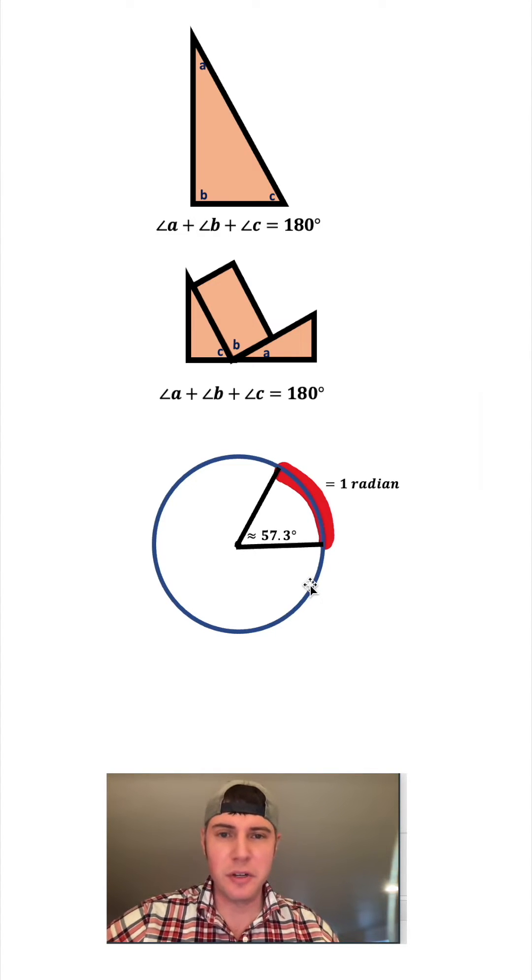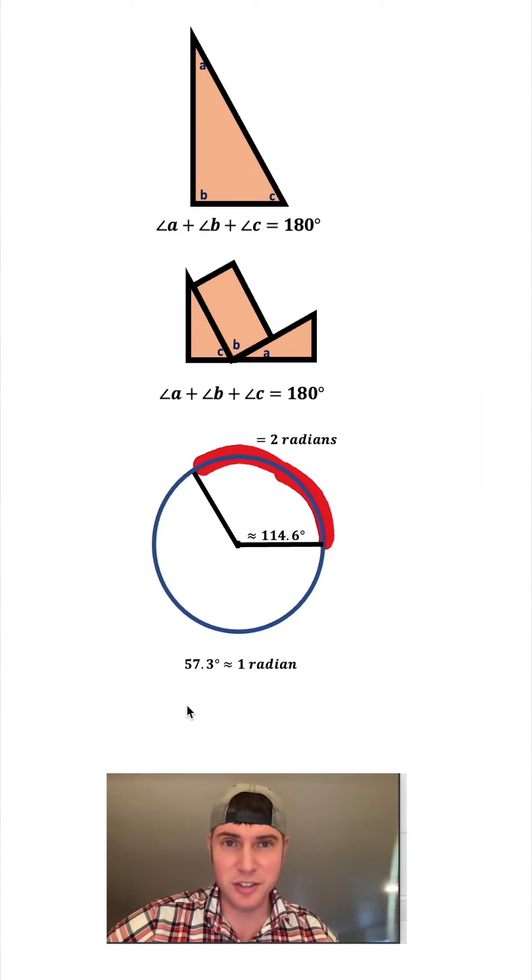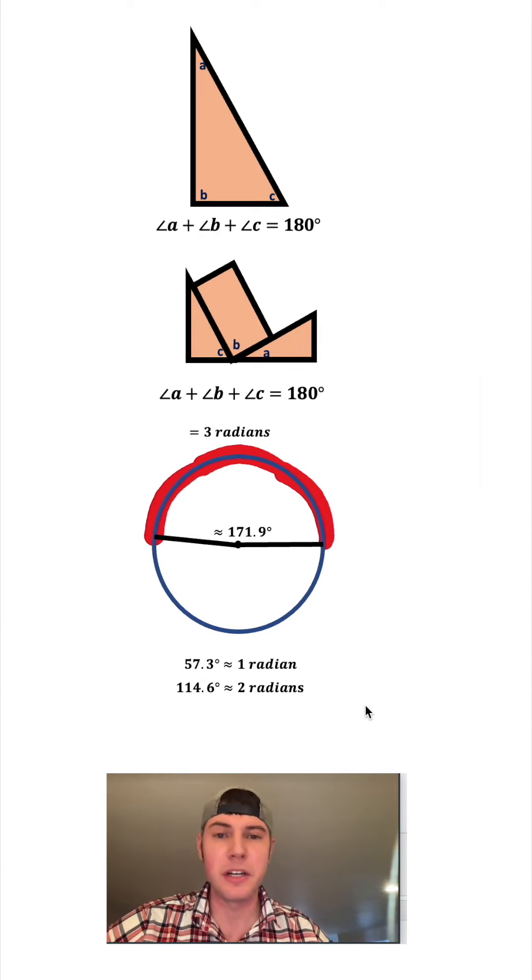That's approximately equal to 57.3 degrees. We can add another radius length on here. That would become two radians. That would be approximately 114.6 degrees. And we can do it again. We have three radians and that's about 171.9 degrees.